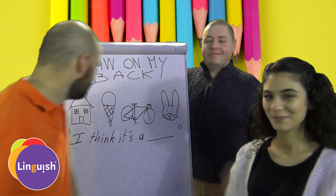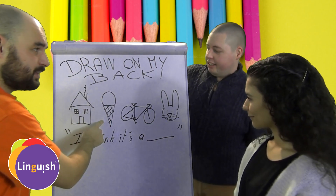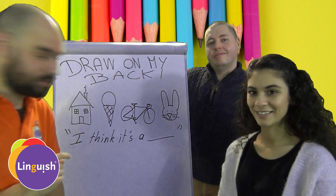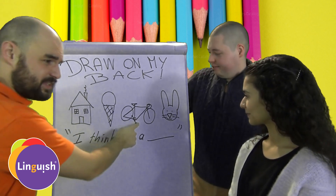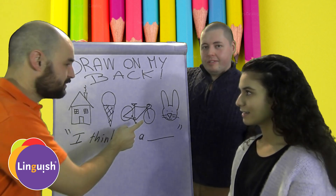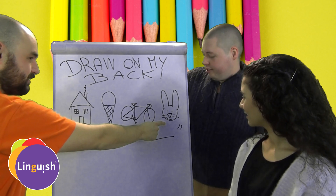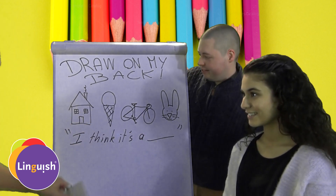Hi! Hello. What's this? It's an ice cream cone. An ice cream cone. Oh, an ice cream. What's this? A bike. A bike. What's this? It's a bunny rabbit. It's a bunny, a rabbit.